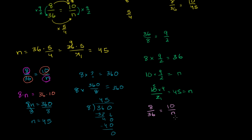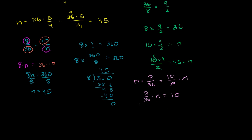The easiest way to solve for n is to multiply both sides by the same thing — the equality still holds. We multiply both sides by n. On the right-hand side the n's cancel out, and on the left-hand side we have 8/36 times n equals 10. Now to isolate n, we multiply both sides by 36/8. Those cancel out and we're left with n equals 10 times 36 over 8, which is 360 over 8.